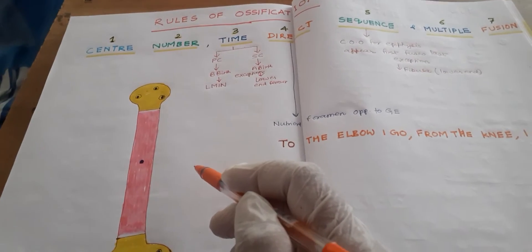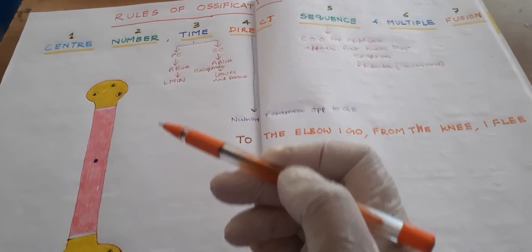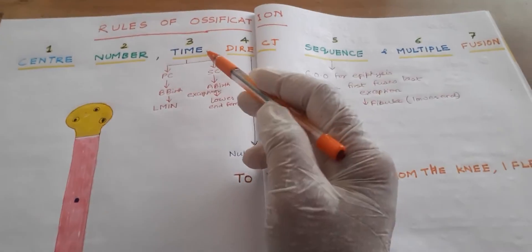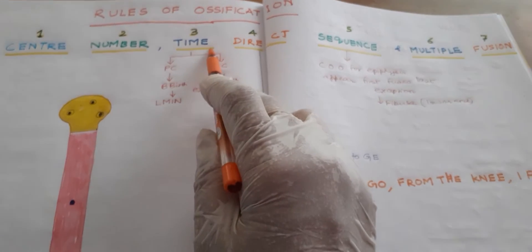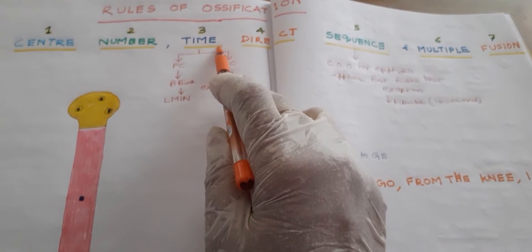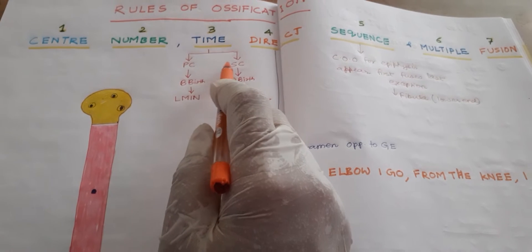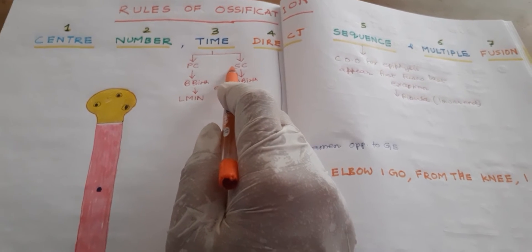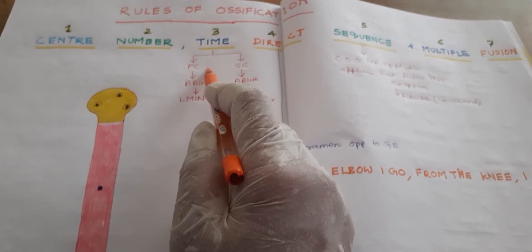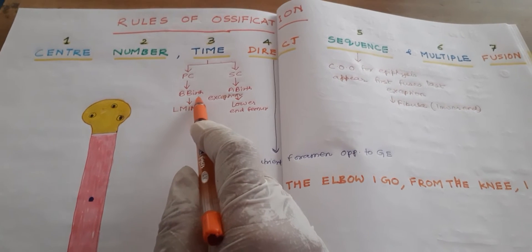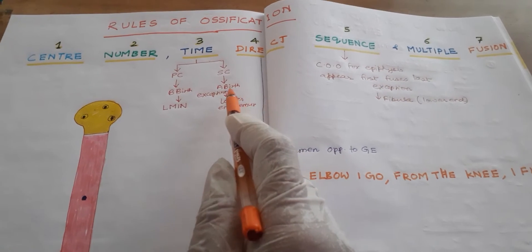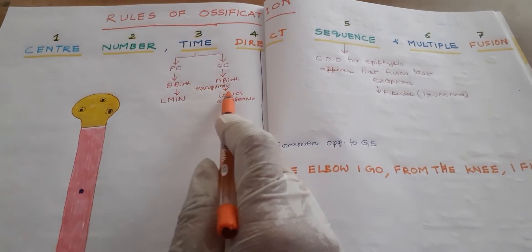Now coming to the third rule — it tells about the timing: at what time ossification starts. The primary center starts before birth, and the secondary center starts after birth. But there are exceptions.